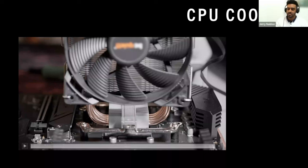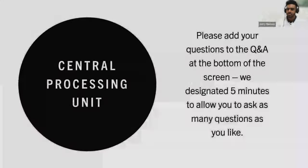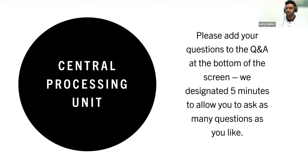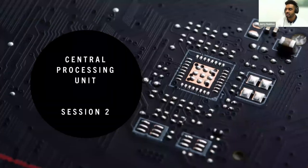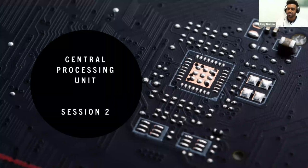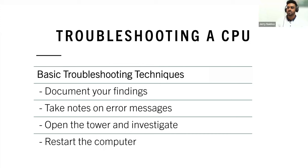That brings us to the end of the first session of this webinar. In this session I introduced you to the CPU, talked about the role and function of the CPU, clock speeds, overclocking, multi-cores, cooling, and selecting the correct CPU. We're now going to move on to session two, which will mainly cover troubleshooting CPUs.